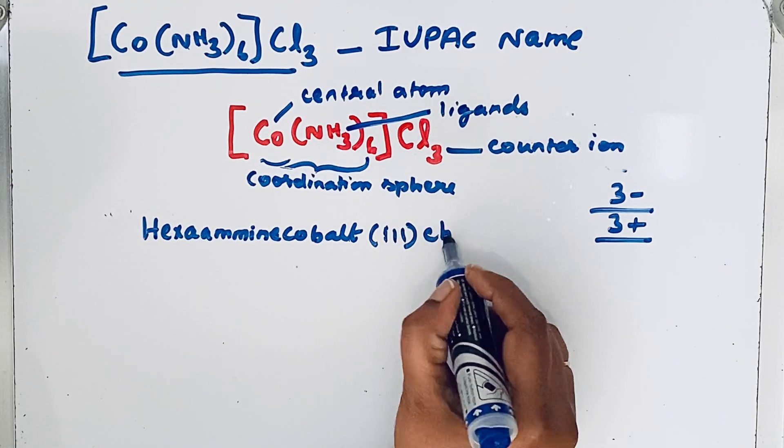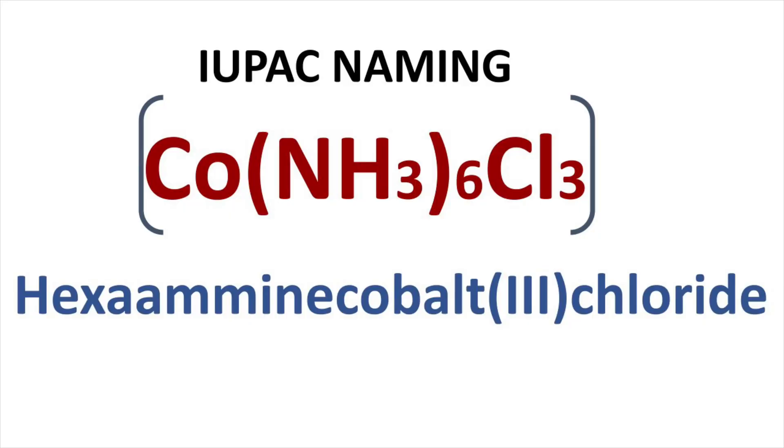Then after that, we write chloride. So the IUPAC name for the compound is hexaamine cobalt three chloride. Thanks for watching.